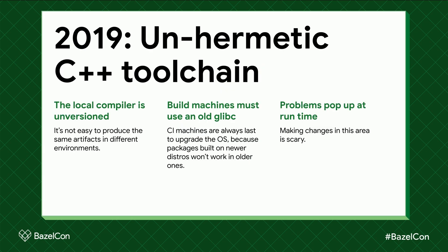Having an unhermetic C++ toolchain causes a lot of inconveniences. The local compiler is unversioned unless you control the execution environment, but if you have developers managing their own laptops you get different versions of the toolchain being used. This makes it not easy to produce the exact same artifacts that you get in production, and it might be more difficult to build a patched version of a production binary and test it by deploying it directly on a server.